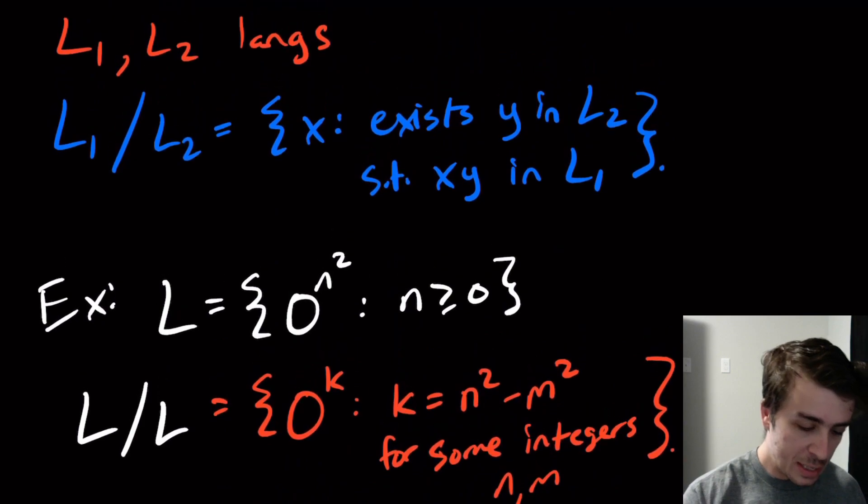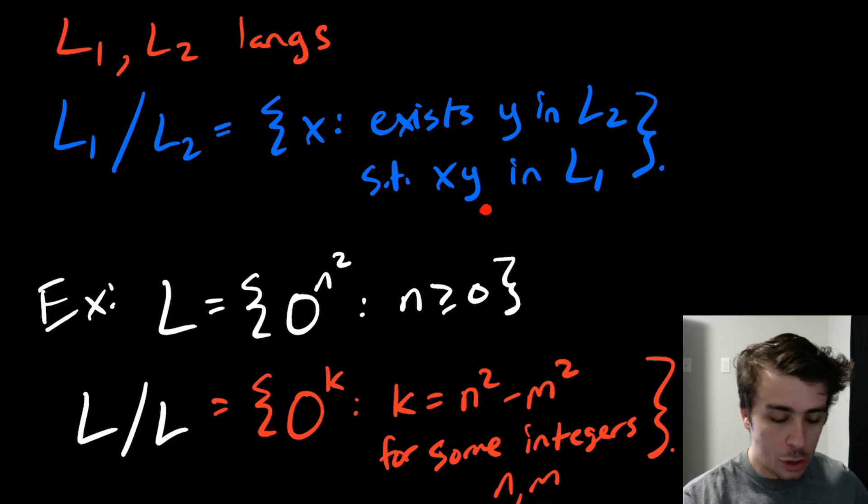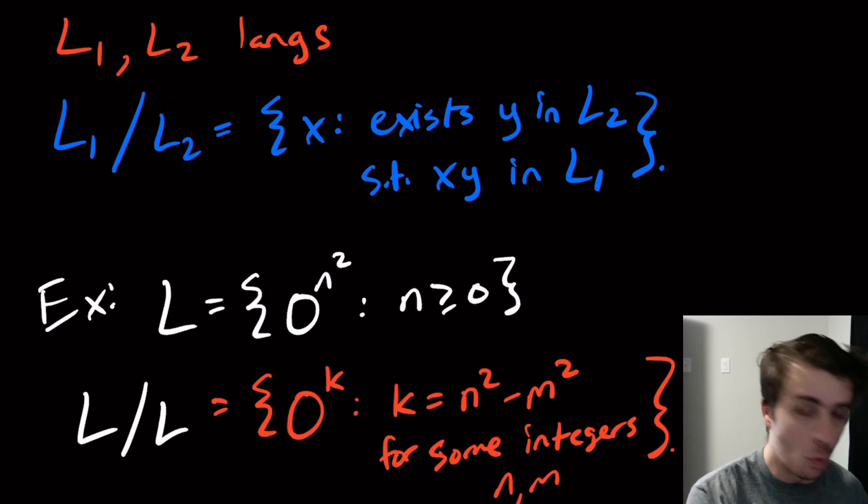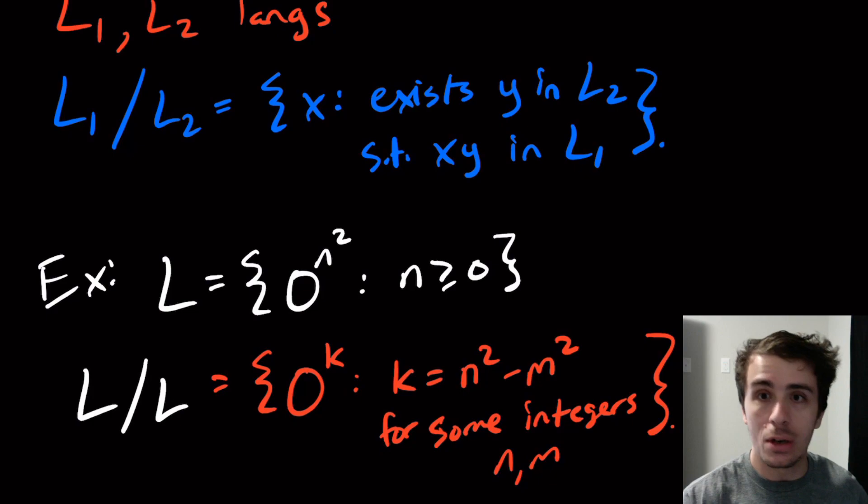So this is the quotient operation. We take two languages and we look at both of them and we're going to take all the strings basically from L1, because the X part came from L1. And if there's some suffix of the string, if that end of the string is in L2, we're going to stick the rest of the string, the prefix, into the language L1 divided by L2. It's kind of like division, although it's not really division because we're only dividing one choice of Y out. Although there could be many choices of Y, for each one of them we're going to look at all the strings that have that suffix and put them in. If there isn't a Y in L2, then the X is not put into this language.